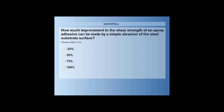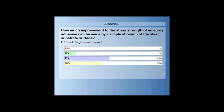The answers are flooding in. Over 90% of you have voted — this is excellent. The results: minus 25% (a reduction in bond strength), 2% voted for that. 12% went for a 20% increase. 46% went for a 75% increase. And 39% went for the 100% increase. So a reasonable spread of answers there, but a surprisingly good number of you got it right.